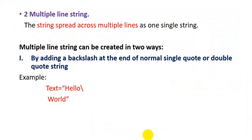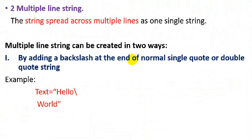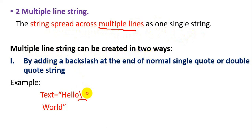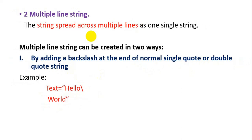Next, we discuss multiple line strings. A string spread across multiple lines is treated as one single string. Multiple line strings can be created in two ways: first, by adding a backslash at the end of a normal single or double quoted string. You type the backslash, continue on the next line, and complete the closing quotation mark — the compiler won't show an error.